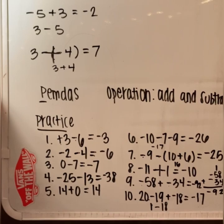Tonight's assignment is going to be the odd numbers, number 1 through 12. You're only going to do the odds, so you only have six problems to do.